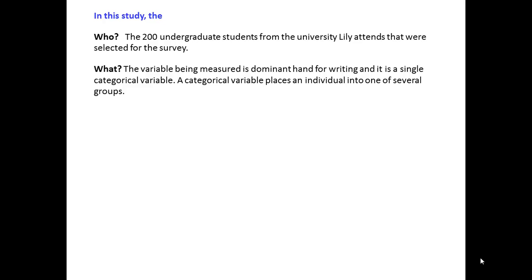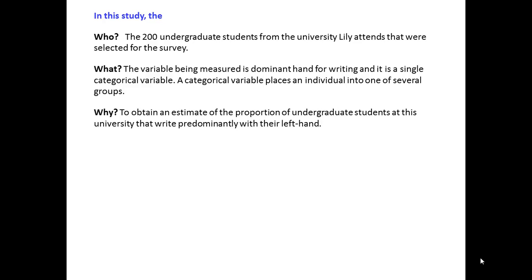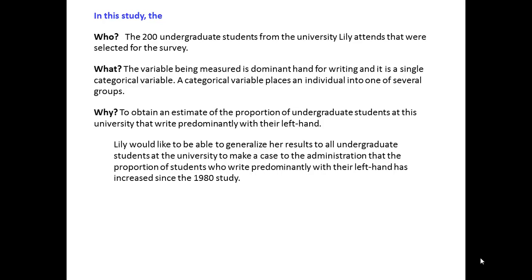In this study, the who was the 200 undergraduate students from Lily's university that were selected for the survey. The what — the variable being measured — is dominant hand for writing, and it is a single categorical variable. Remember, a categorical variable places an individual into one of several groups. The why: Lily wanted to obtain an estimate of the proportion of undergraduate students at her university that write predominantly with their left hand. Lily would like to generalize her results to all undergraduates to make a case that the proportion of left-handed writers has increased since 1980 and that the school should fund more left-handed desks.